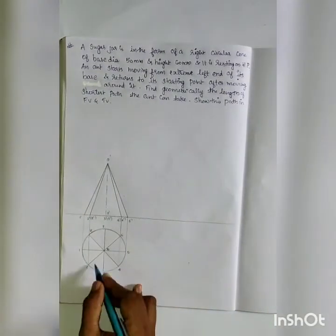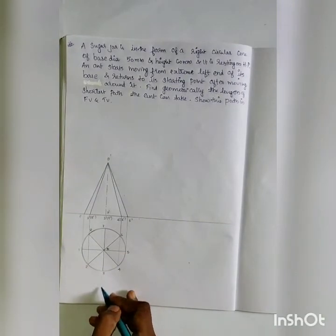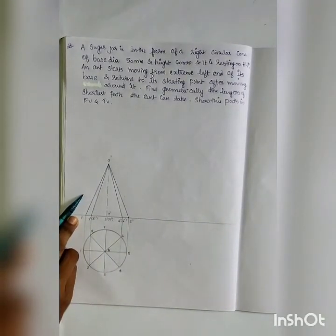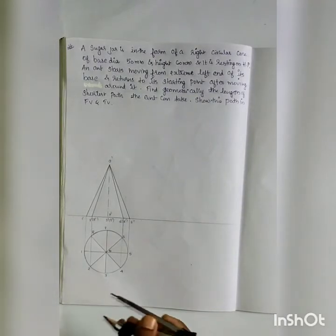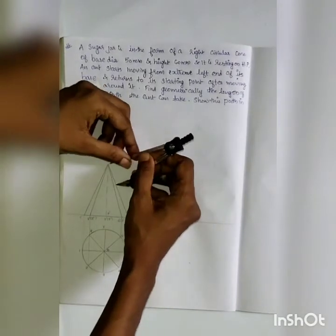The top view and front view is drawn. The diameter is 45 mm and height is 60 mm. Now we will draw the development of the cone. In the development of the cone, we will use the slant height length.